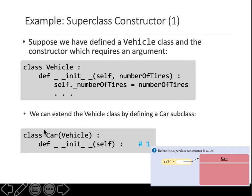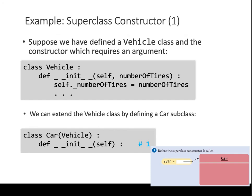When you go to the subclass called Car, in the initialize function, the first line should call the constructor of the parent class using super().__init__(). In the parentheses, give the parameters that constructor expects — in this case, the number of tires: two if it's a motorcycle, four if it's a car, eighteen if it's a truck, and so on.